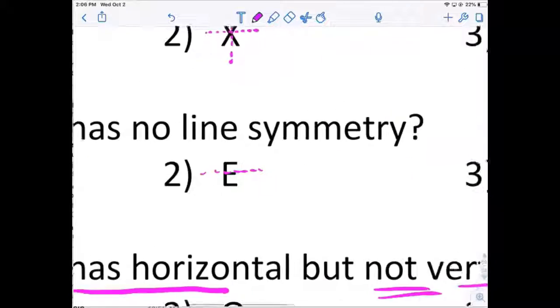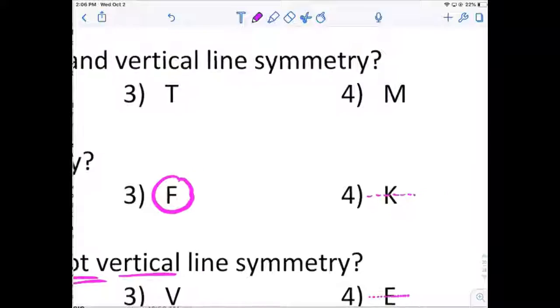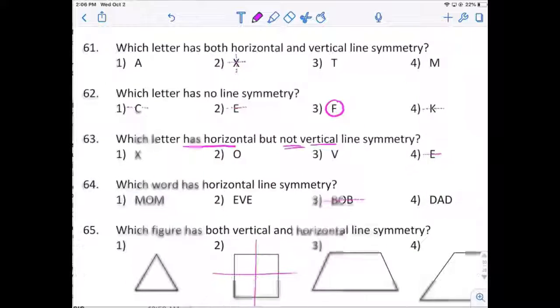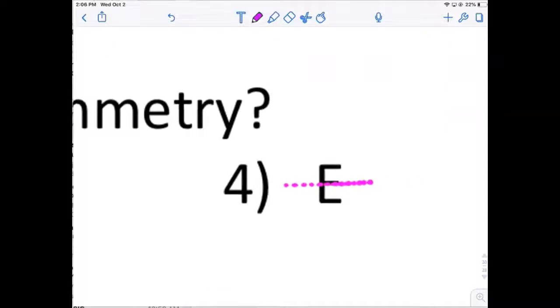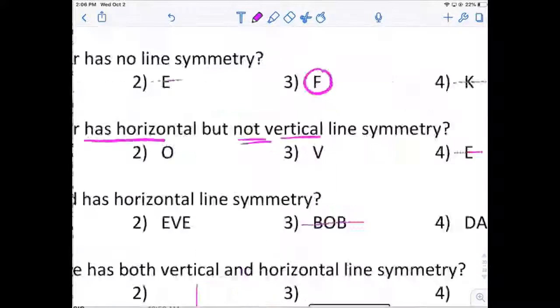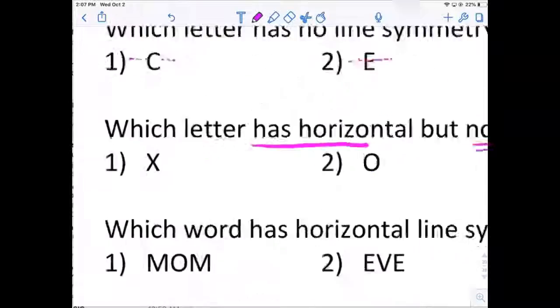You can fold C, E, and K, but not F. Which one has horizontal but not vertical? That would be E. It only has horizontal. V has neither, and X and O have both.